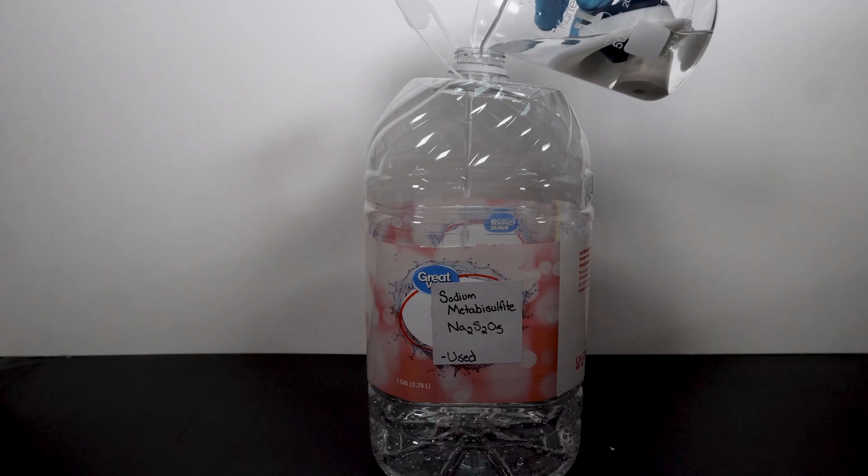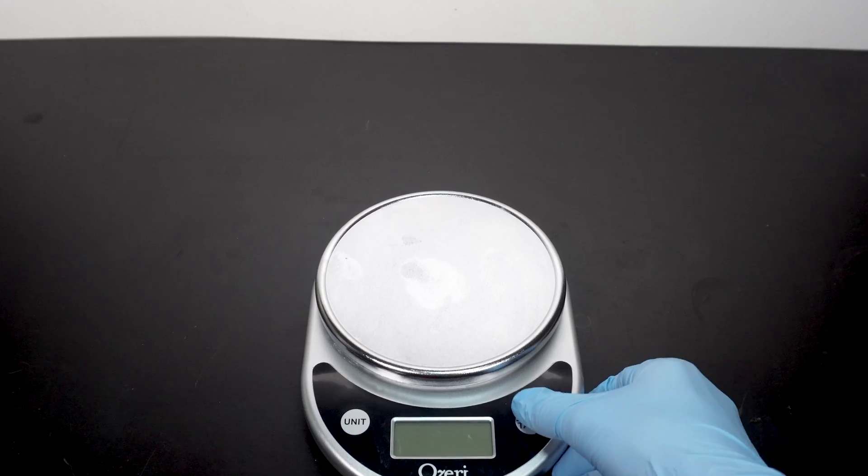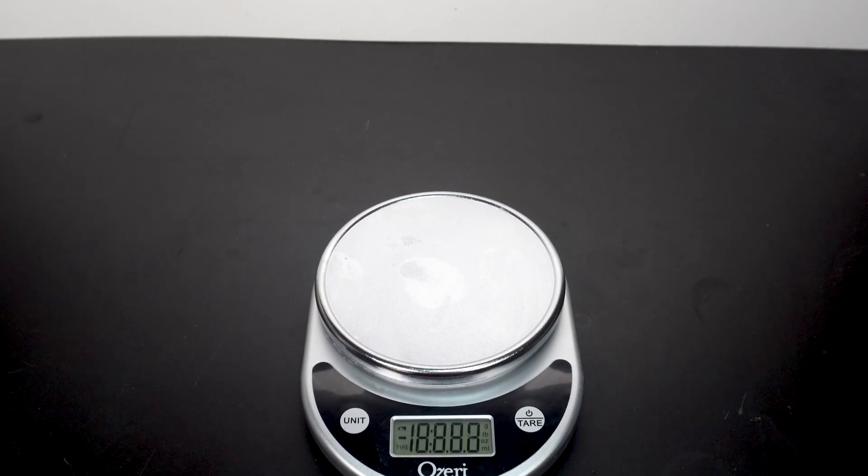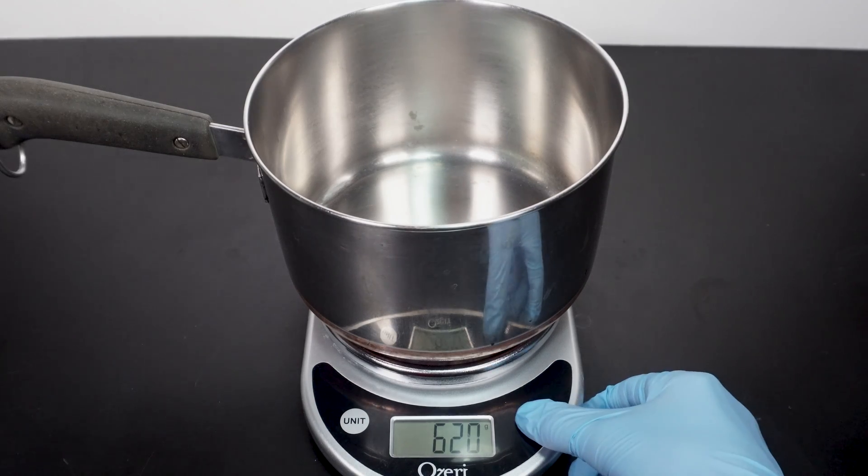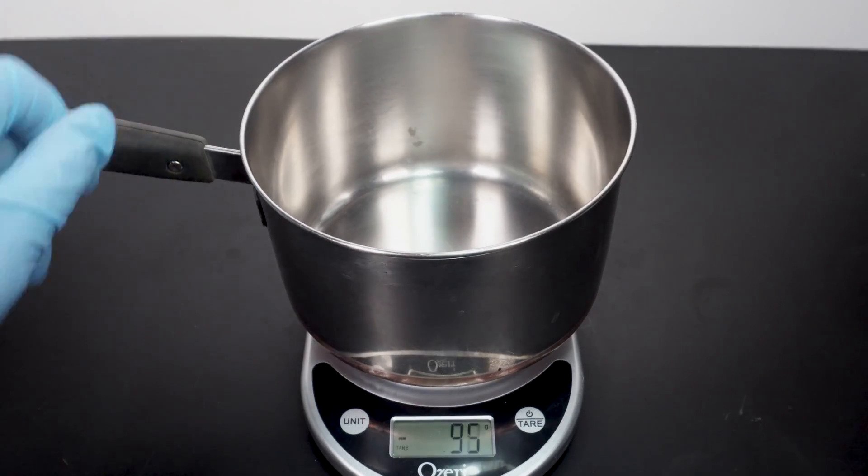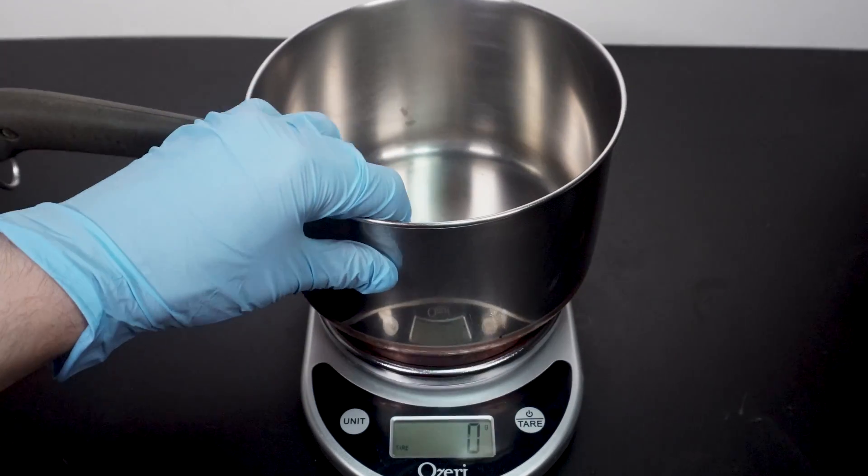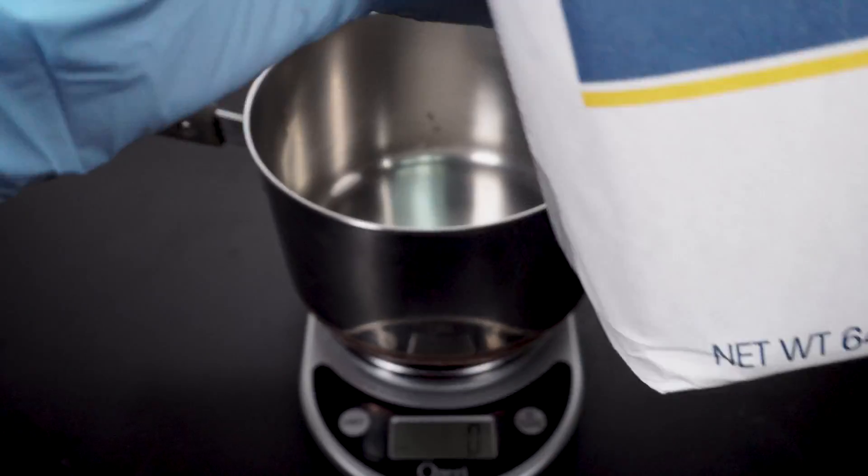Afterwards, I dispose of all of the sodium metabisulfate in a plastic container and label it so I know it's not waste water. Now for more of a fun part. I have to make a solution of sugar and water for the purpose of giving the yeast sugar to ferment into alcohol. This process is called making a sugar wash and it is by far the most simple way to give yeast a nutrient source.